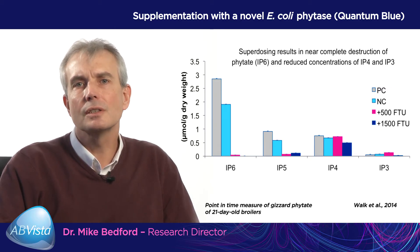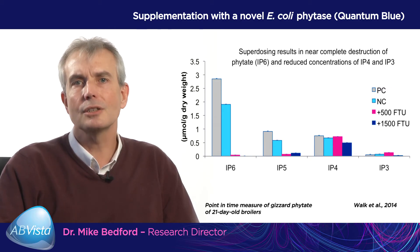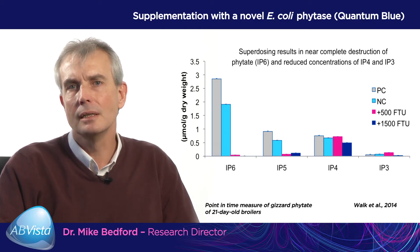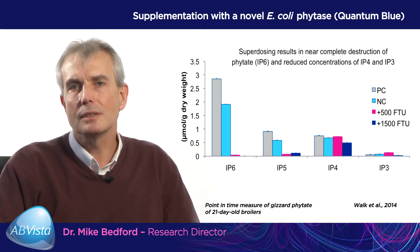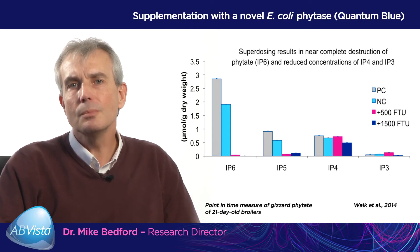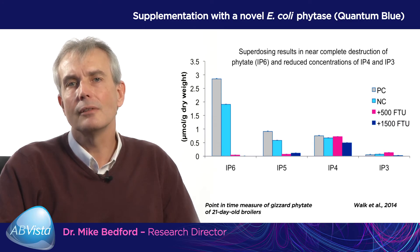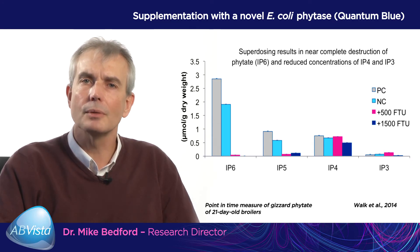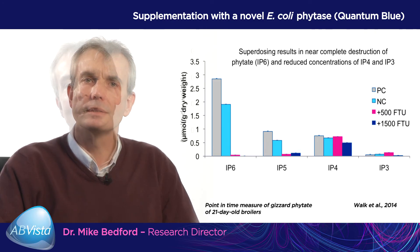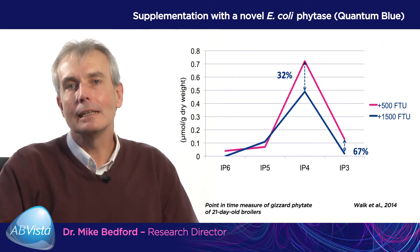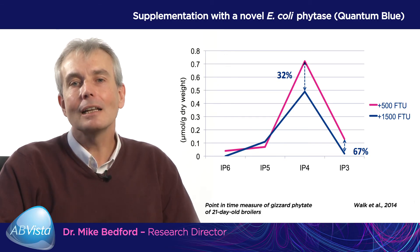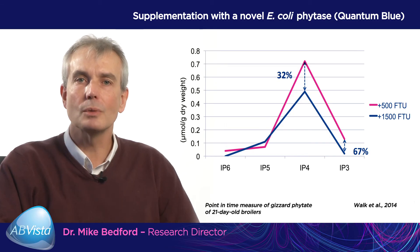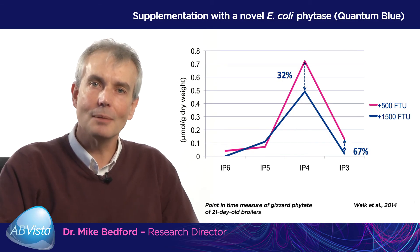If we look at IP3 concentrations, the lower dose of phytase actually results in a slight increase in IP3 concentrations, but superdosing removes that increase almost entirely — in fact the concentration of IP3 is now lower than that of the negative control. So superdosing removes the excess of IP3 and prevents the buildup of IP4, something that works with this enzyme that clearly wasn't working with the Citrobacter brachii phytase when only used at 500 units. You can see quite clearly the dramatic effects between a regular dose of Quantum Blue and the superdosing effects — a 32% reduction in IP4 concentrations when you superdose.